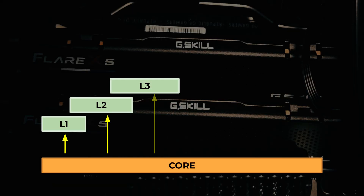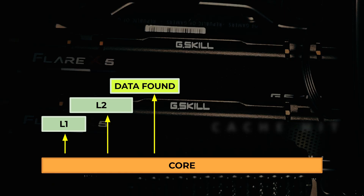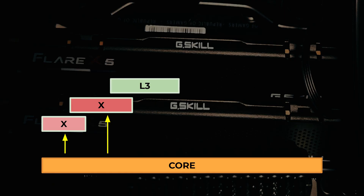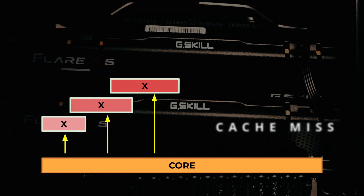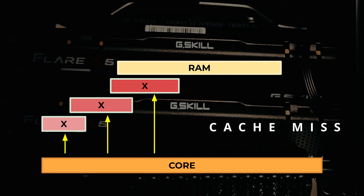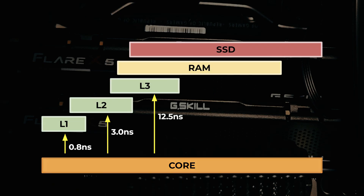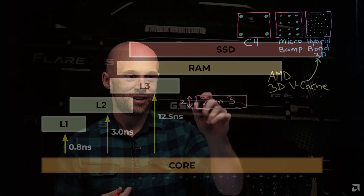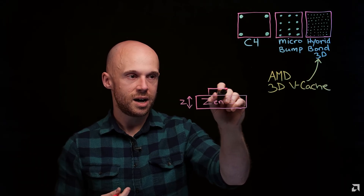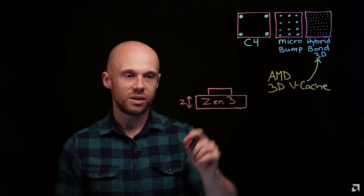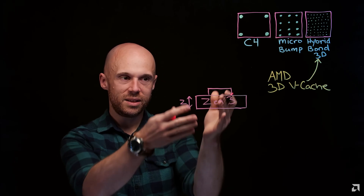If the data is already there, that's called a cache hit, and everything runs extremely fast. But if the data is missing, we have a cache miss, so the CPU has to fetch it from RAM and also store a copy back into the cache for future use. Cache access happens in just a few nanoseconds, and that's why AMD's large 3D vCache on the X3D series can boost performance so much.